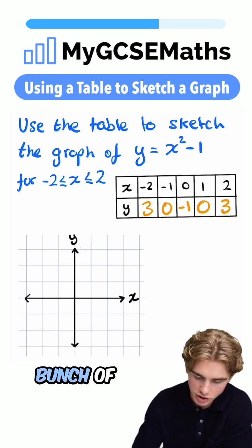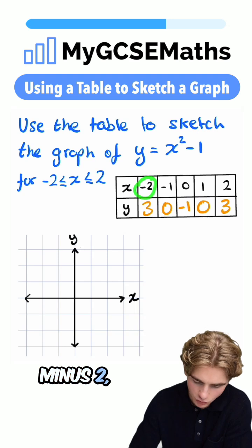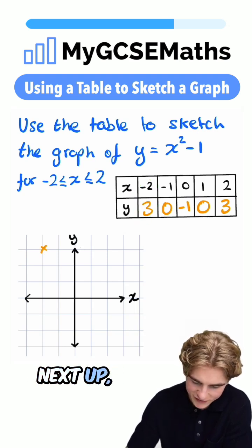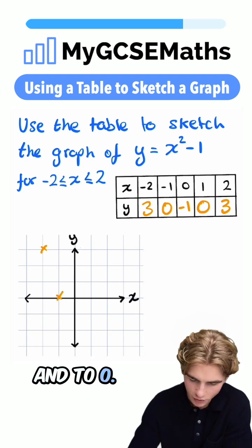Now guys, we have a bunch of coordinates which we can plot on. When x is equal to minus two, y is equal to three. So let's go across to minus two and up to three. Next up, when x is equal to minus one, y is equal to zero. Let's go across to minus one and to zero.